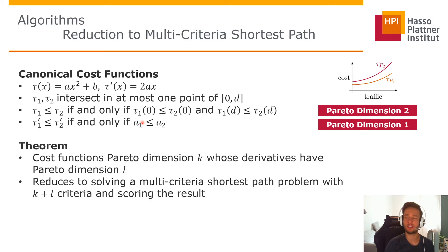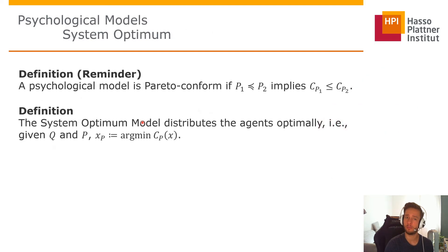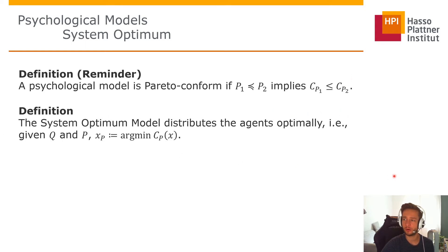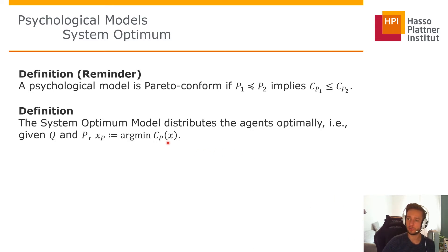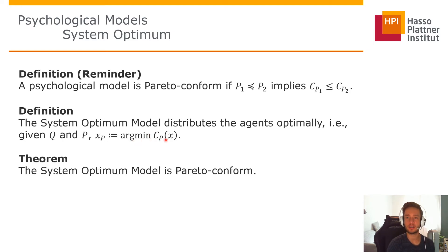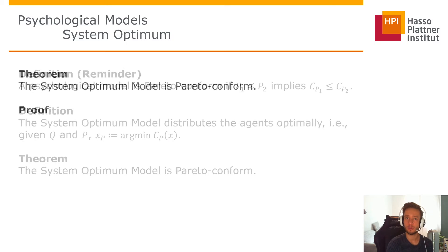The question is: are there actual psychological models that are Pareto conform? Pareto conform means dominance implies lower overall costs. The system optimal model is Pareto conform — it assumes given Q and P, drivers distribute optimally so X_P equals argmin of C_P(X). Drivers minimize this function, and this model is indeed Pareto conform.